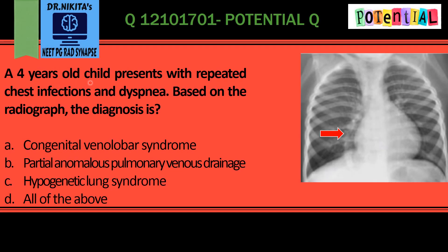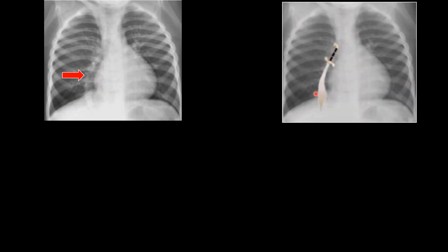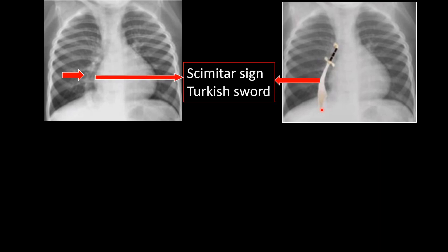A four-year-old child presents with repeated chest infections and dyspnea, and we have been given this chest radiograph. The chest radiograph shows a linear curved opacity parallel to the right border of the heart, which has the shape of a Turkish sword also called a scimitar. So this becomes the scimitar sign.